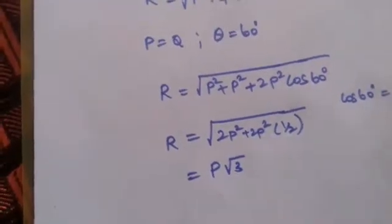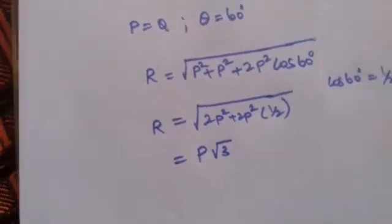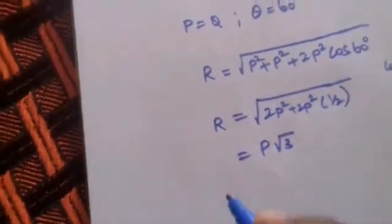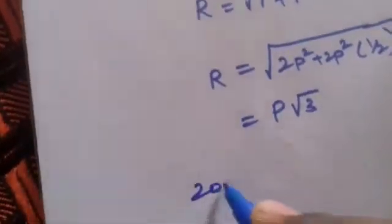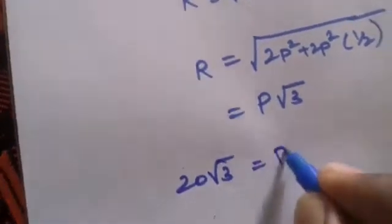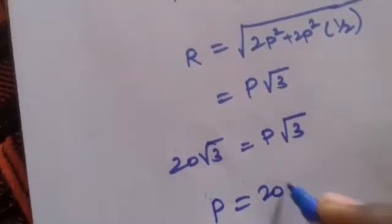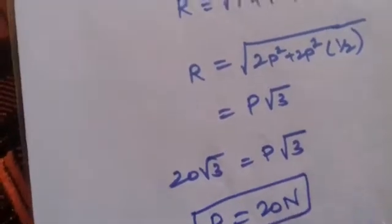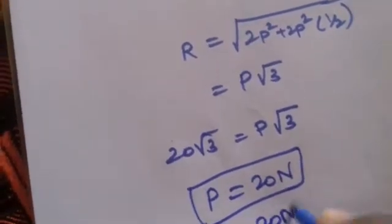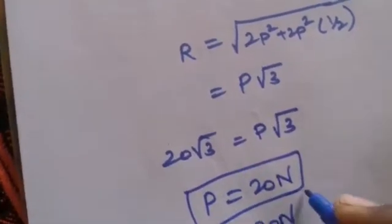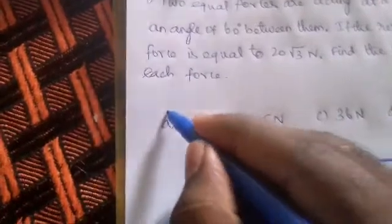This gives R = P√3. The resultant is 20√3 Newton, so P√3 = 20√3, therefore P = 20 Newton and Q = 20 Newton as well. The answer is 20 Newton.